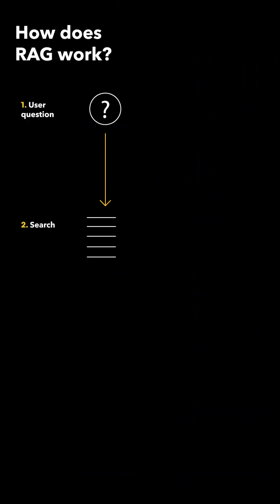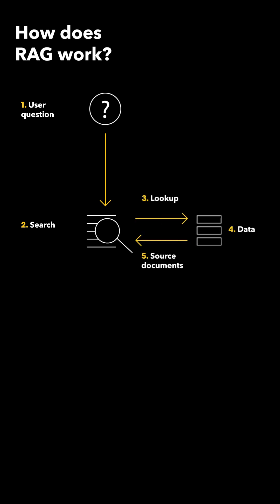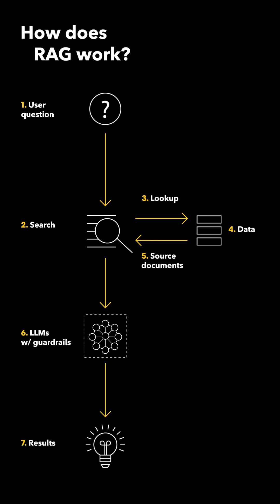Retrieval Augmented Generation, or RAG, is one of the most commonly used Gen AI techniques. It's supposed to help large language models give more accurate, grounded answers by sourcing additional context from external documents. But what our researchers found was a surprise.